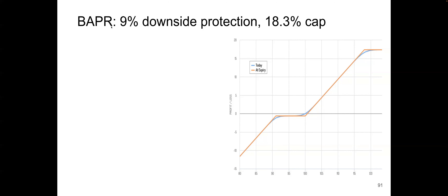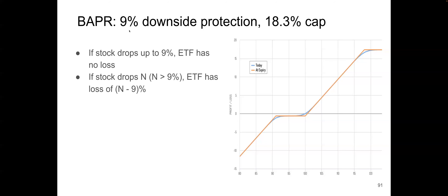I will use BAPR as an example, where it has 9% downside protection and a much higher cap, which is 18% in a year. When you buy this ETF, if the S&P 500 index drops up to 9%, you don't have any loss. If it drops beyond 9%, then you start having losses. For example, if it drops 19%, your portfolio will drop 19 minus 9, which is 10%.